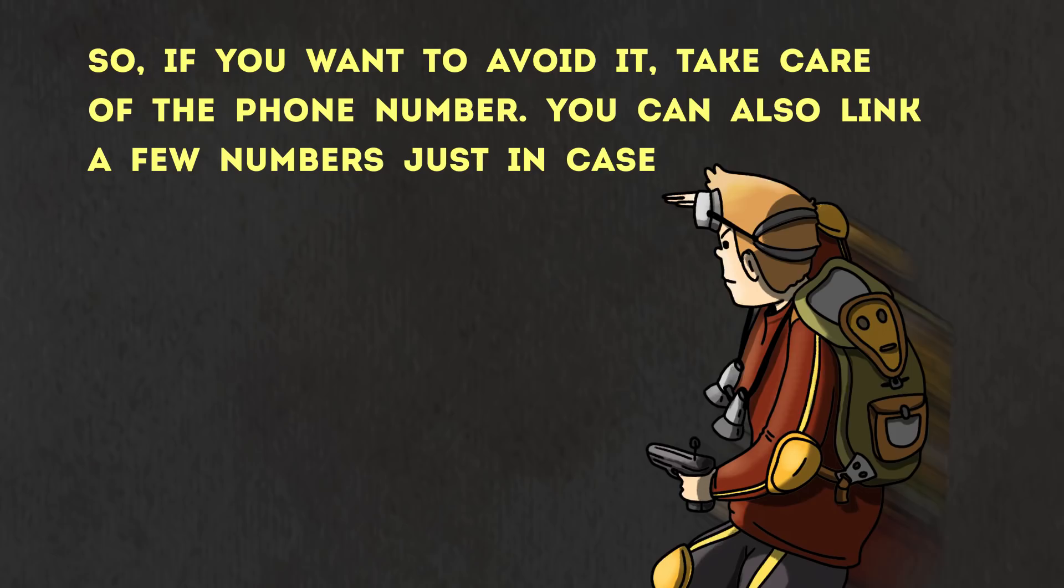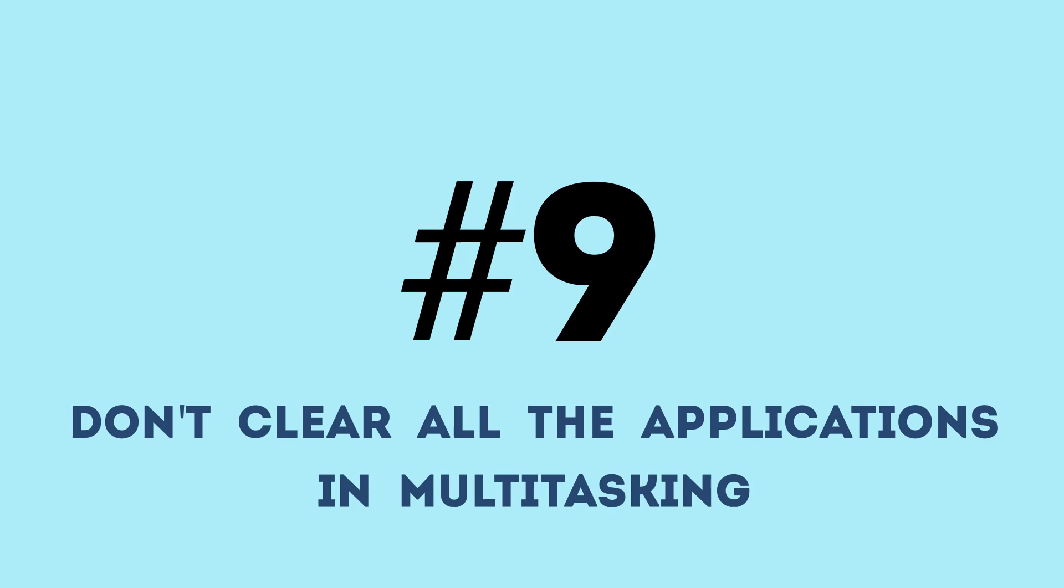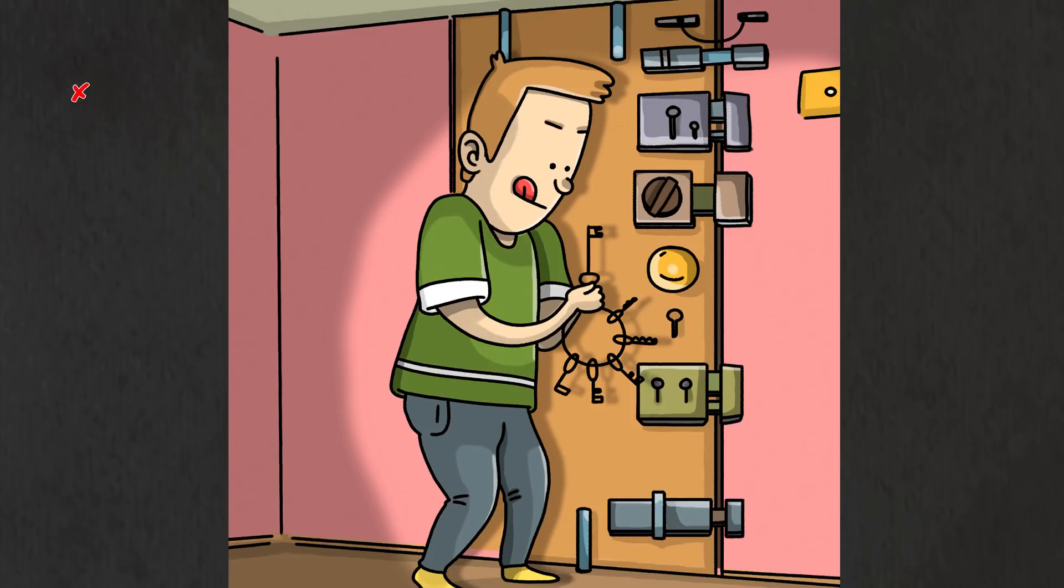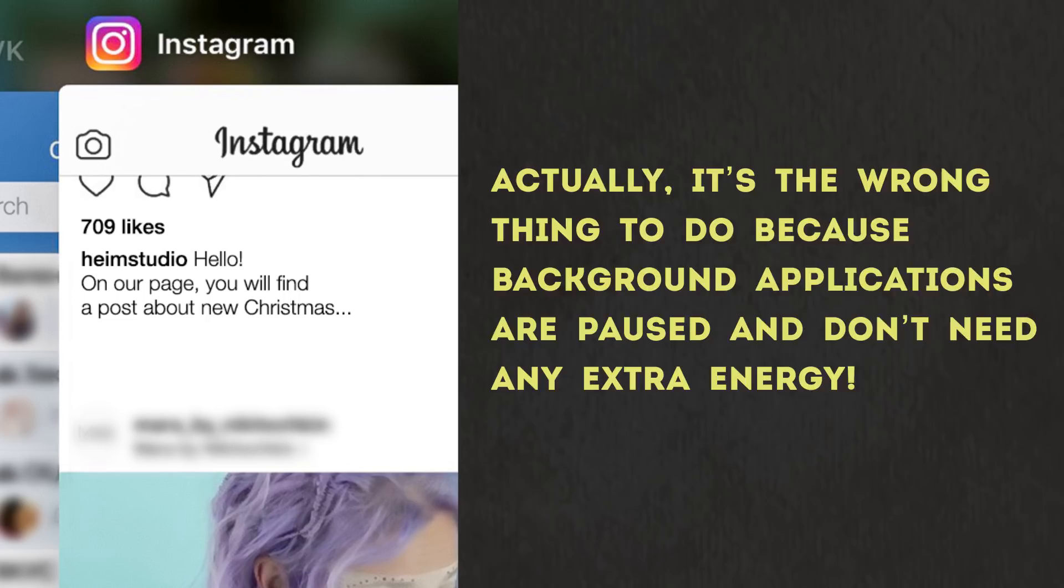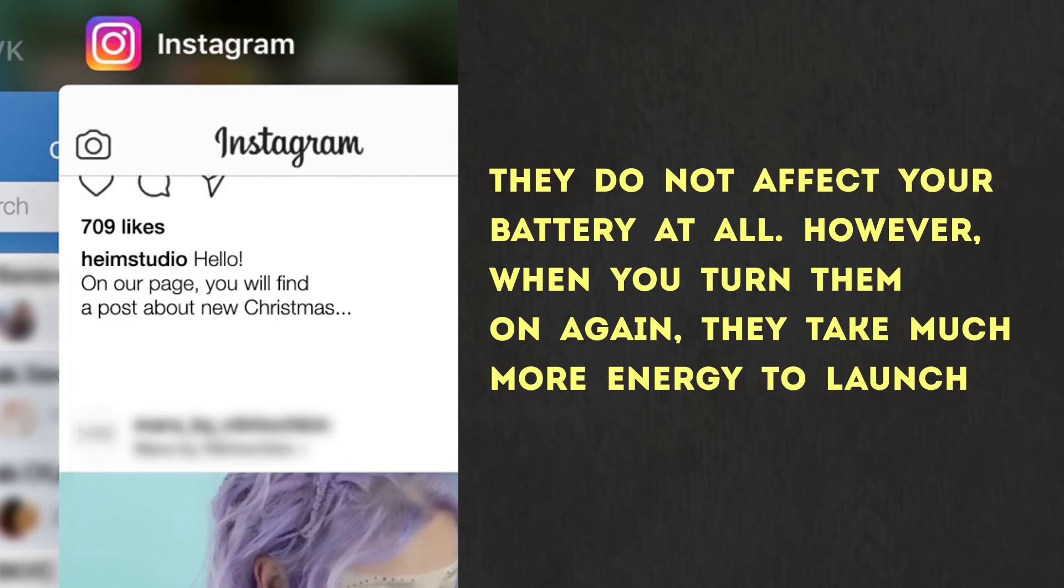Number 9: Don't clear all the applications in multitasking. Among people who use Apple products, there are some who are always trying to close all their apps, which is supposed to save energy. Well, here's a surprise. Actually, it's the wrong thing to do, because background applications are paused and don't need any extra energy. They do not affect your battery at all. However, when you turn them on again, they take much more energy to launch. So this common habit does more harm than good.